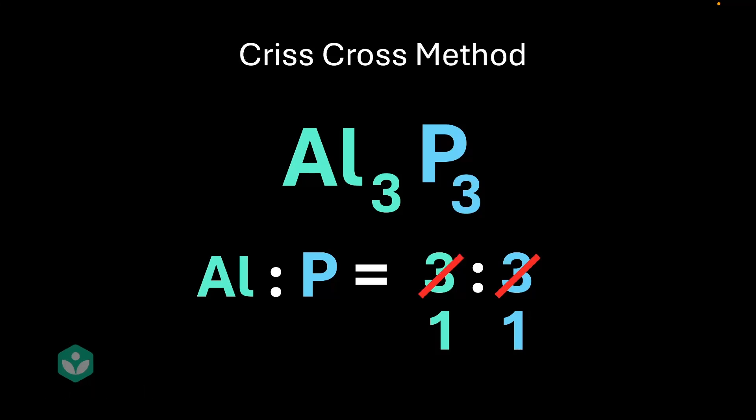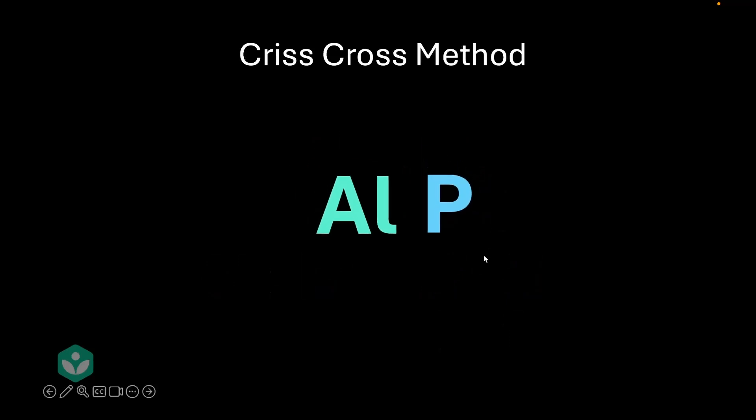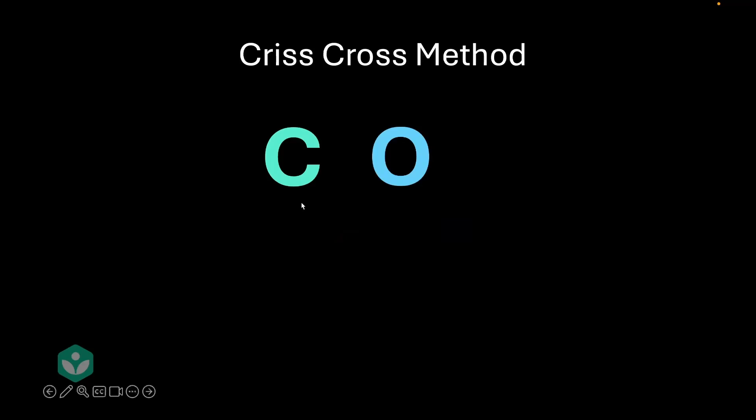But can I do the same thing here as well? Of course you can. So, what we've got here is Al1, P1. Pause for a moment and look at it. We've got Al1, P1. When we get rid of those redundant ones, we're left with AlP. Amazing.